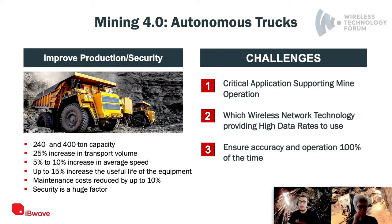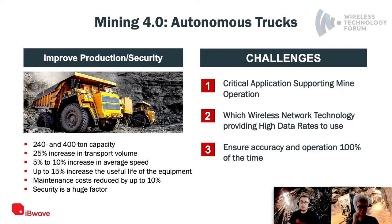Autonomous trucks can go at higher speeds, they're switching to electric engines which need less maintenance and have longer life. Security is a huge factor too — those trucks have a lot of sensors so they can detect human presence or another truck so they don't collide. It's smart mining now. But this comes with challenges: it's critical that the trucks keep operating. They need constant network coverage providing high data rates, low latency, position reporting, and vehicle-to-vehicle communication.